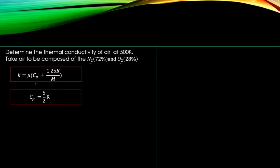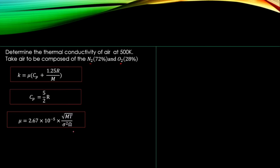To find the viscosity we use the Chapman-Enskog formula: viscosity = 2.67 × 10⁻⁵ × sqrt(molecular weight × temperature) / (energy parameter² × collision integral). Check the description for a link to the video on how to find viscosity and the collision integral for any gas.